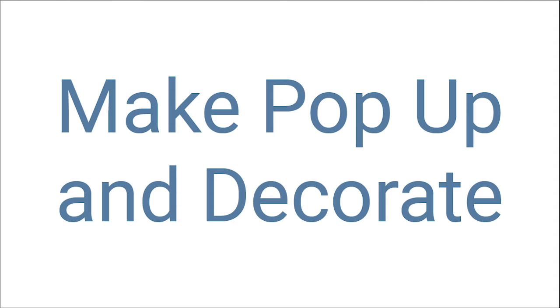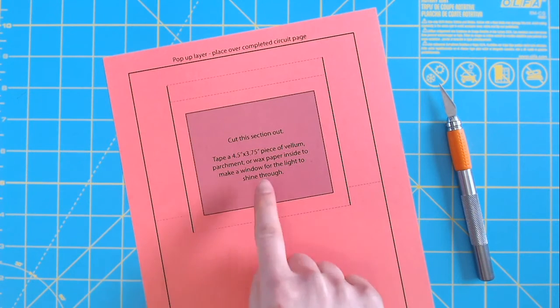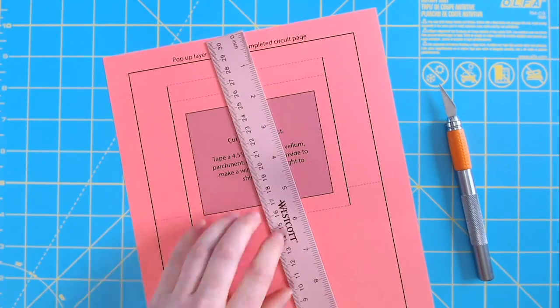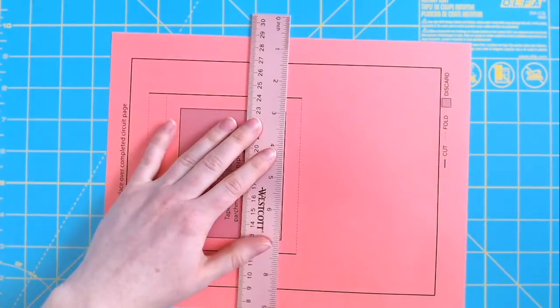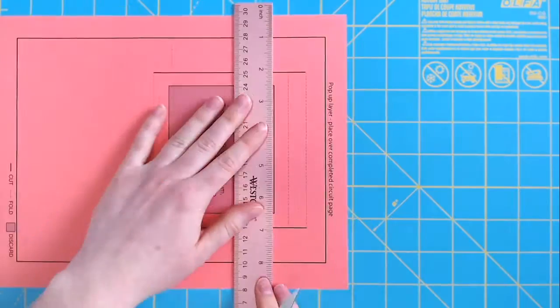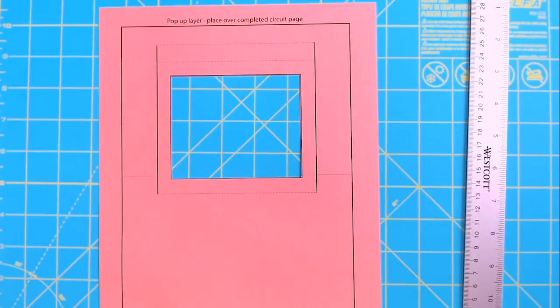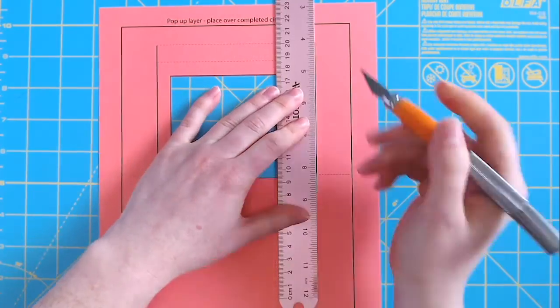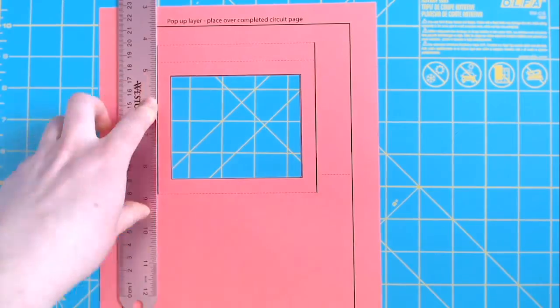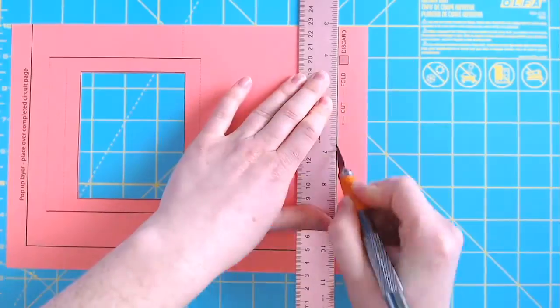Now it's time to add the pop-up layer and customize our light-up card. First, we'll cut out the middle of the frame to make a window. A hobby knife works best for this step. I'm going to use a ruler to help you make straight, even cuts. Next, we'll cut the two lines on either side of the window to release the middle so we can pop it out. Finally, trim around the edges of the template.